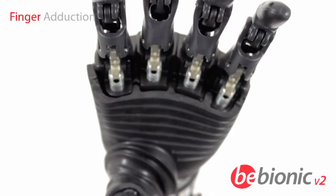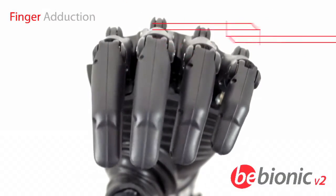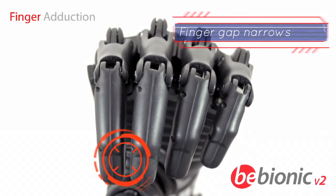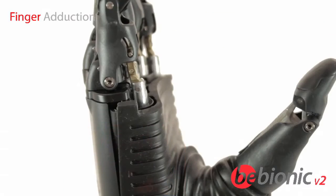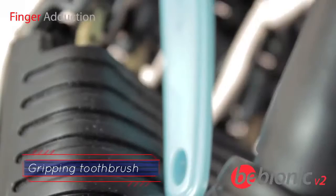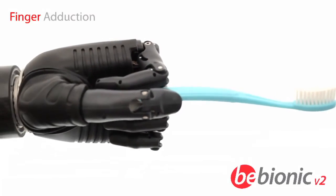The fingers move together naturally as the hand closes, creating finger adduction grip. This allows the user to grip thin objects, such as cutlery or a toothbrush, between the fingers.